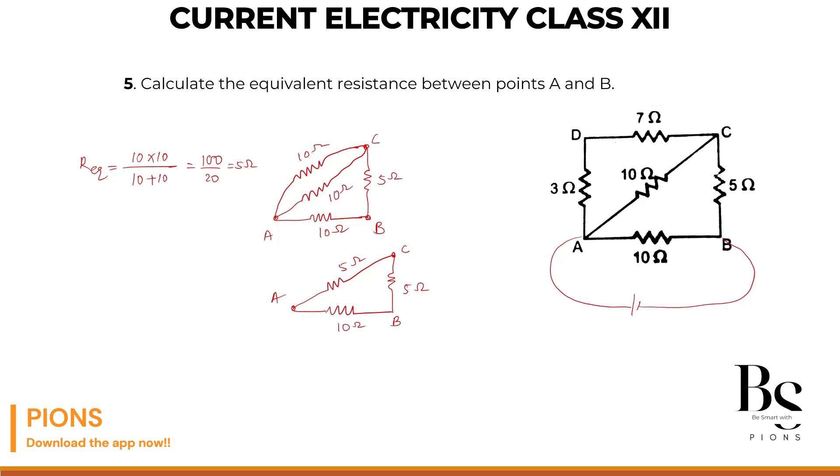Now, if you are connecting a battery here between A and B, the current which is going from A to C, the same current will go to B because there is no other path. So this 5 ohm and this 5 ohm, they are in series.